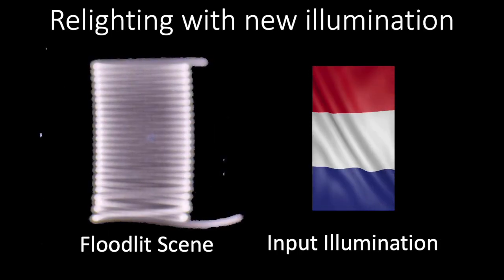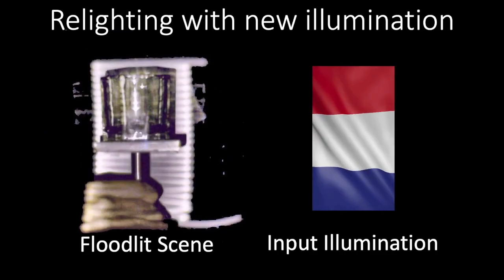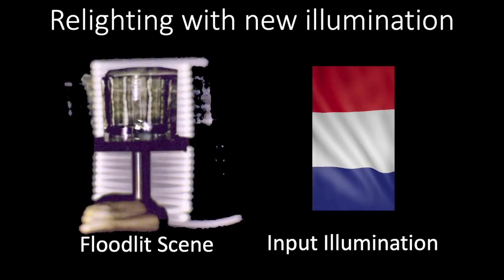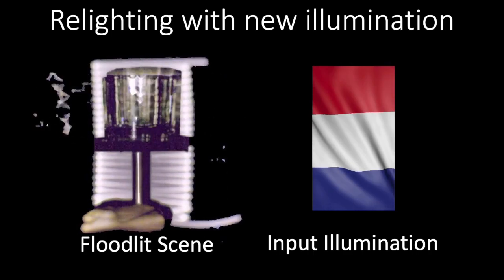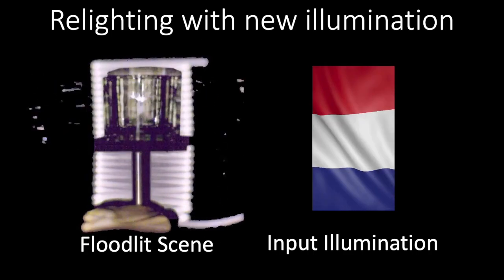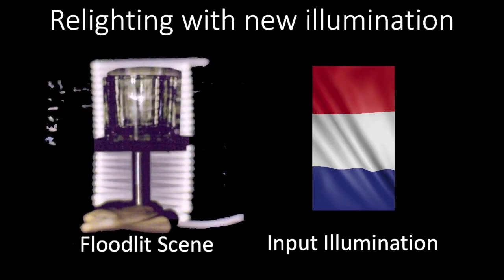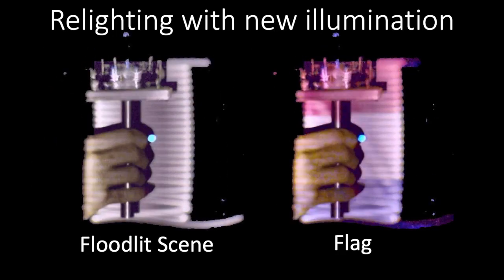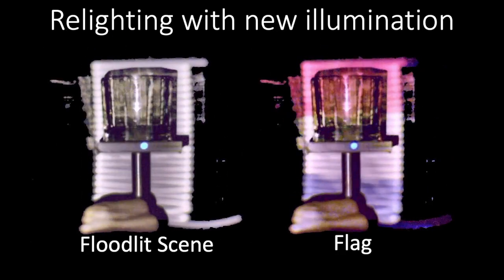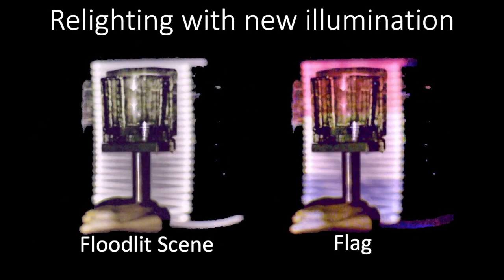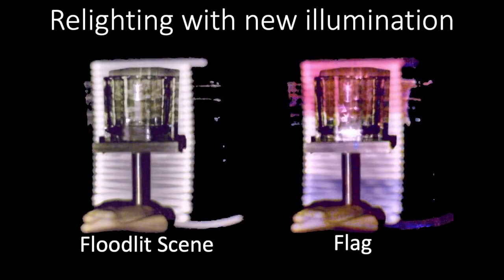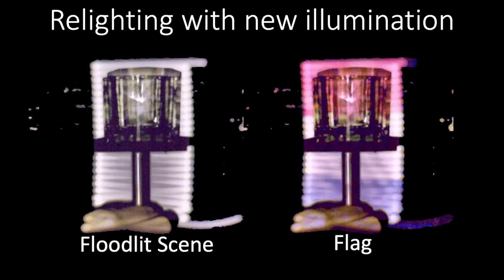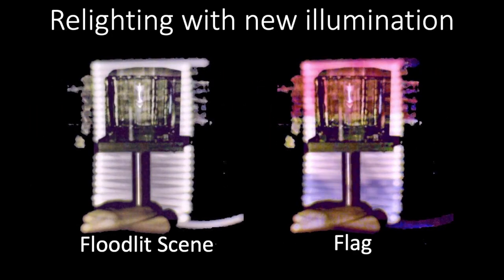This full capture of the light transport matrix enables relighting of scenes with global illumination, which is not possible with any previous method. Here we show the input relighting illumination for the glass scene, and here we show the relit scene. Note that the caustics on the background are relit with the correct combination of new colors, while the direct specularity is also colored differently in the relit result. Our system captures the light transport at each frame in this video.